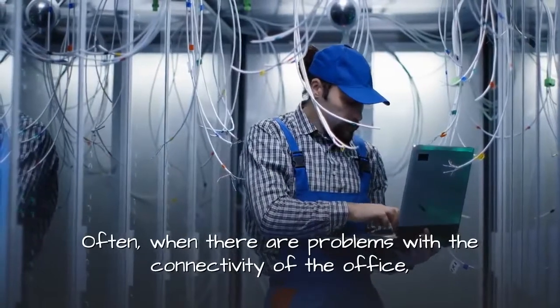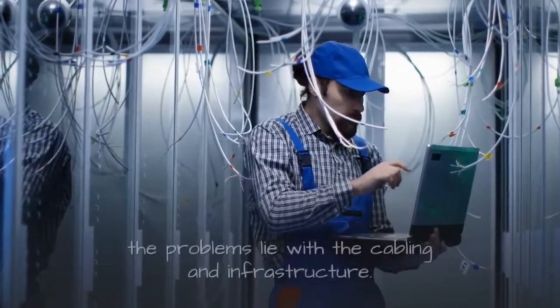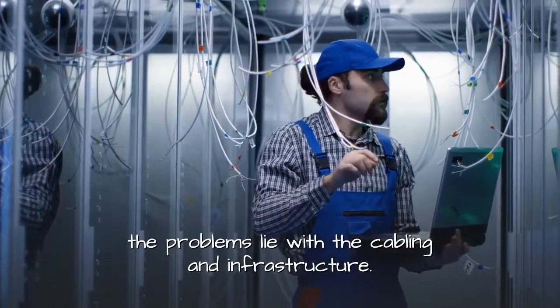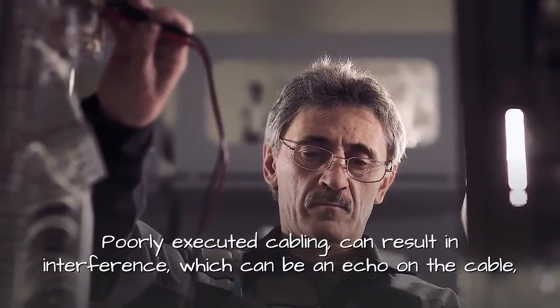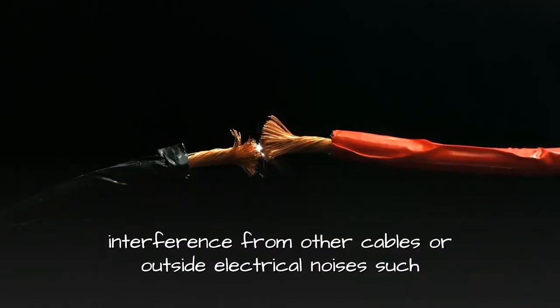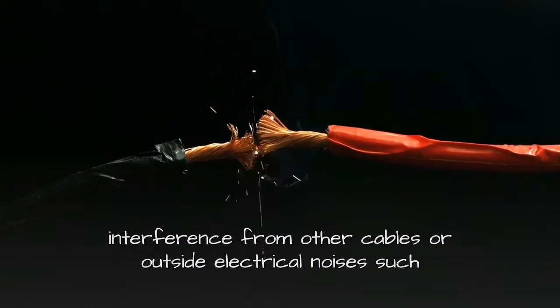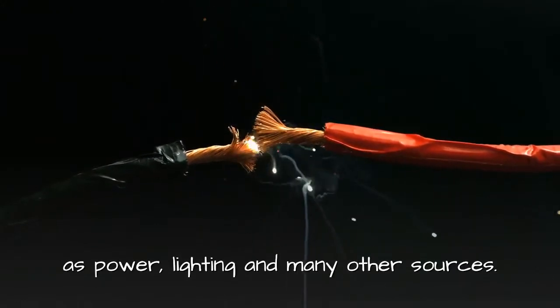Often, when there are problems with the connectivity of the office, the problems lie with the cabling and infrastructure. Poorly executed cabling can result in interference, which can be an echo on the cable, interference from other cables or outside electrical noises such as power, lighting and many other sources.